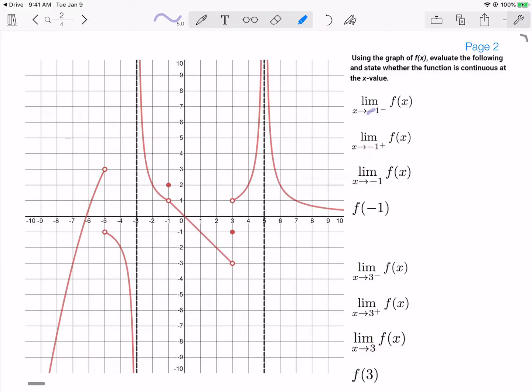Now we're going to look at x approaching negative 1, but first from the left. As I come from the left, I'm approaching this hole which has a y value of 1. And as I approach from the right, I'm again approaching the same exact hole.